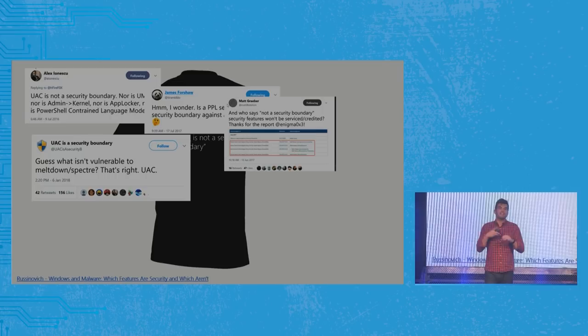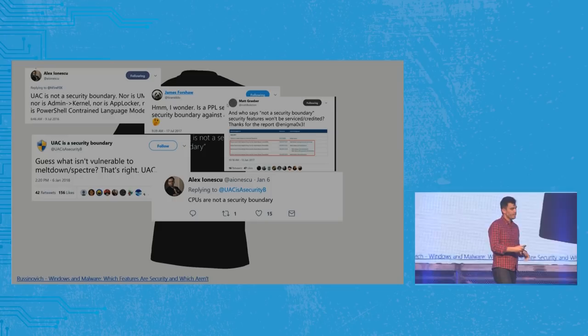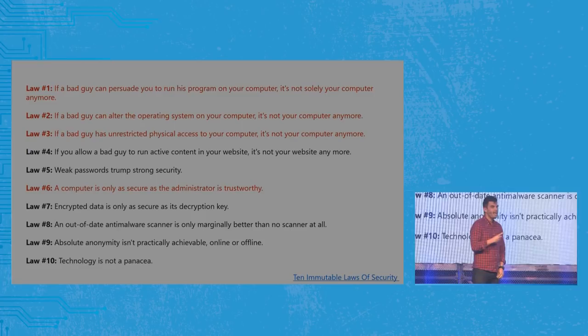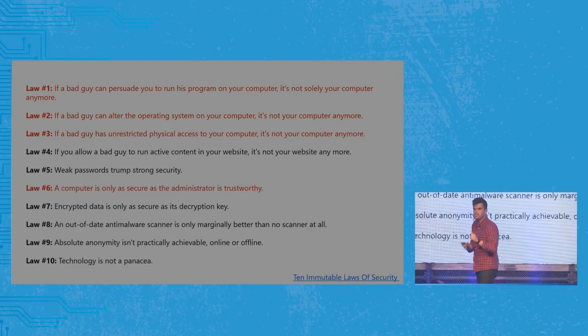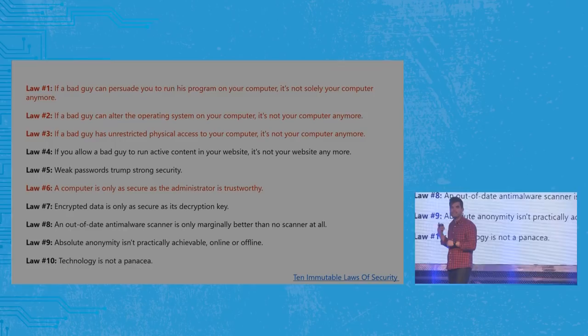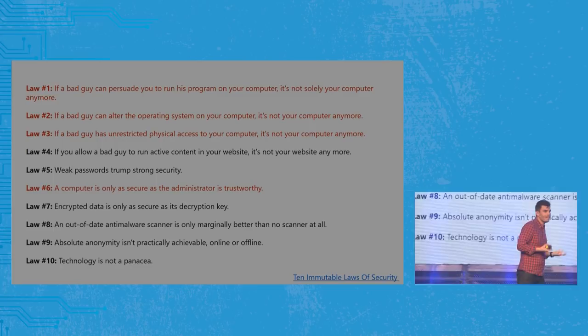Security boundaries are always changing. This introduces another bug in the system: we have 10 immutable laws of security. In computer science, 'immutable' means something that will never change. Interestingly, I see four or five things in that list that are probably pretty different than when it was originally published in the early 2000s. For example, 'If a bad guy can persuade you to run code on your machine, that machine is no longer safe.'